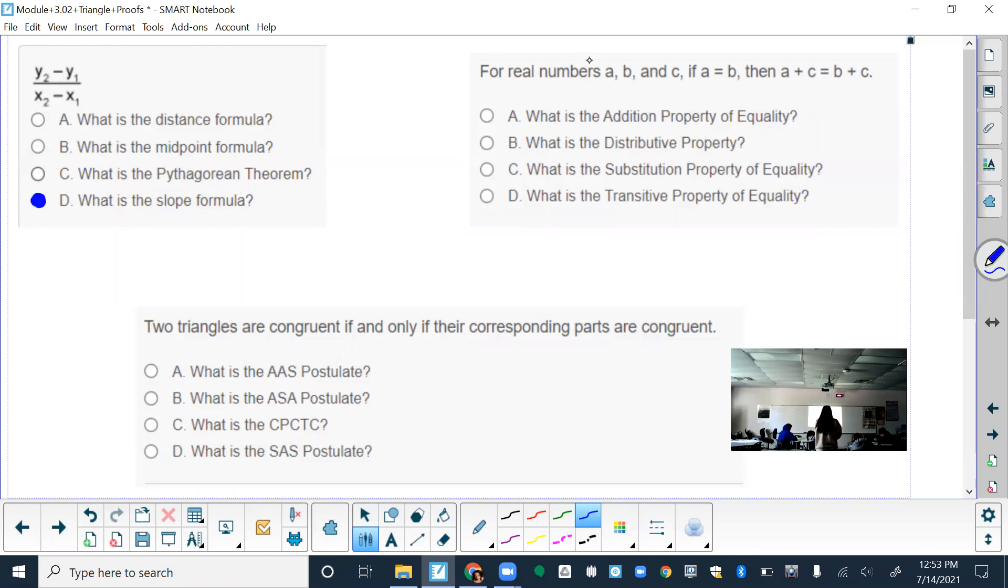Then we have, for real numbers A, B, and C. If A equals B, then A plus C equals B plus C. So that's one of the ones that we haven't talked about, at least in this class. Anyone have a guess? The correct answer for this one is actually A. It's the addition property of equality.